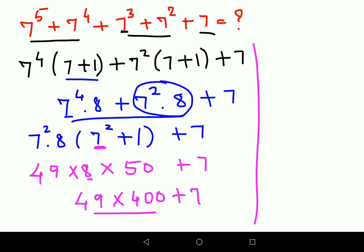And when you multiply 49 into 400 you get the answer as 19600, and the plus 7 is still left. So final answer for this particular question comes out to be 19607.